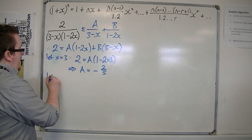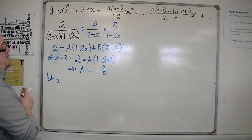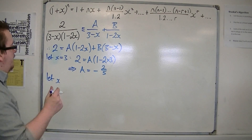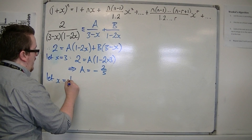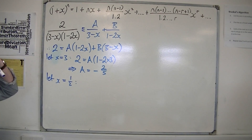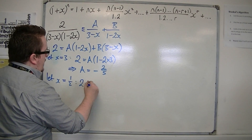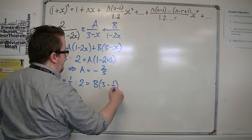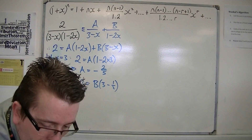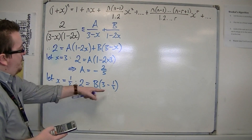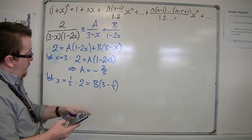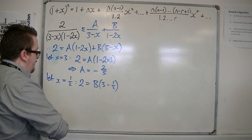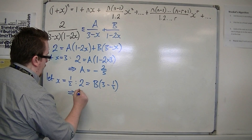And if I then let x equal 1 half, I'm going to get 2 is equal to B lots of (3 take away 1 half). I'm just going to use a calculator on that. So dividing both sides by (3 minus 1 half), 2 divided by 2.5 gets me 4 fifths, so B is 4 fifths.